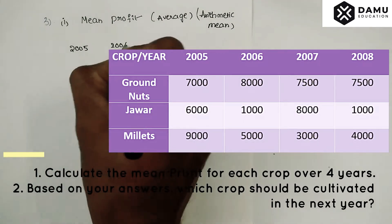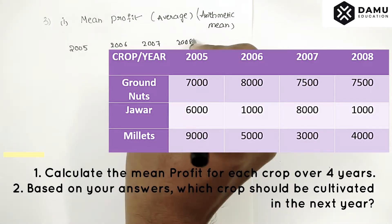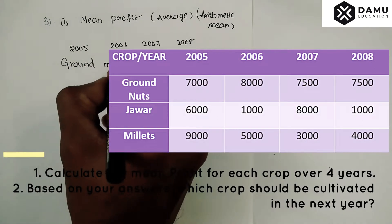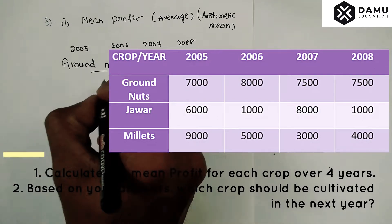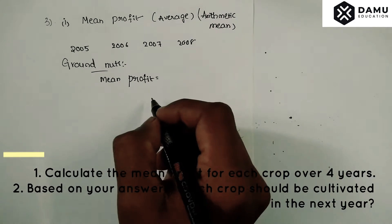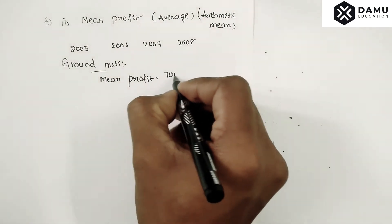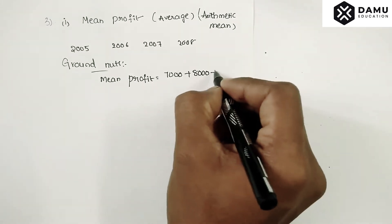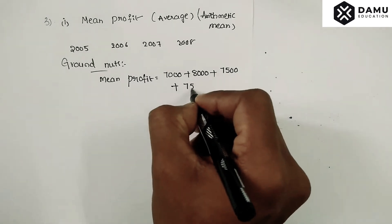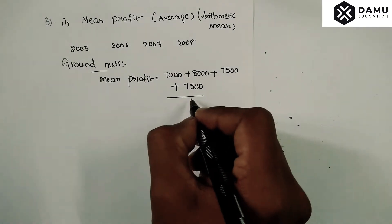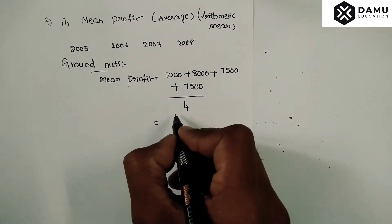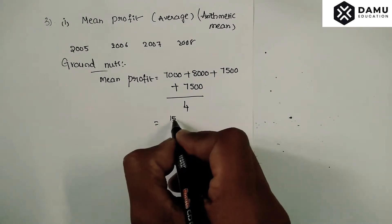For groundnuts, the profits for 2005, 2006, 2007, and 2008 are given. The mean profit will be equal to the sum of all the profits: seven thousand plus eight thousand plus seven thousand five hundred plus seven thousand five hundred, divided by the number of years, which is four.